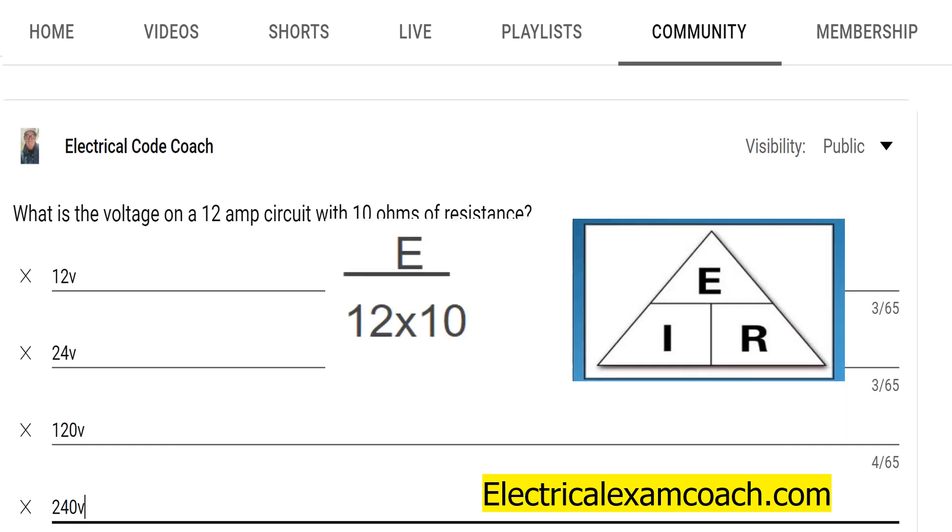So we're going to go back to the basics here with Ohm's law. And what we're going to do is we're going to plug in what we know. We know that we know the amperage and we know the ohms. So we're going to take those two out, put it in our Ohm's law formula. We take 12 multiplied by 10 and we're going to find out that the answer is 120 volts.